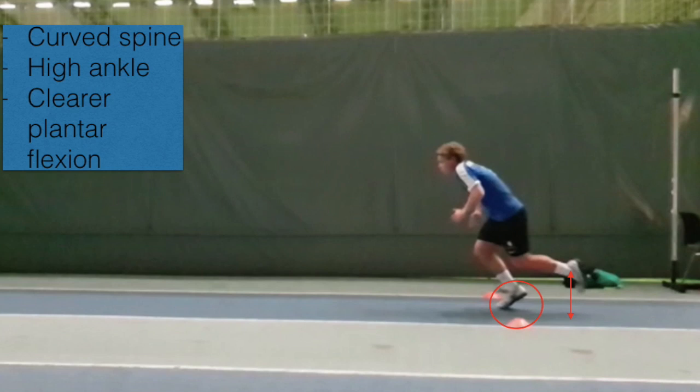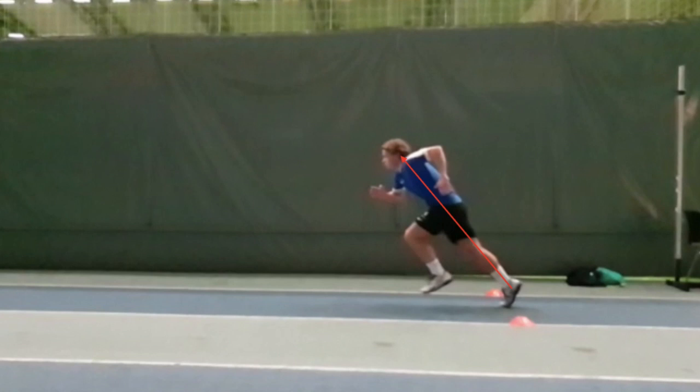Whether this is due to a skill issue from insufficient sprint training or a capacity issue cannot be said without assessing. However, this could be a tool used by the body to try to elevate time on the ground so that he could generate more force, as the quality to produce force rapidly might be poor. In the final still picture, we can see that the athlete is fairly upright and does not triple extend in the legs fully.